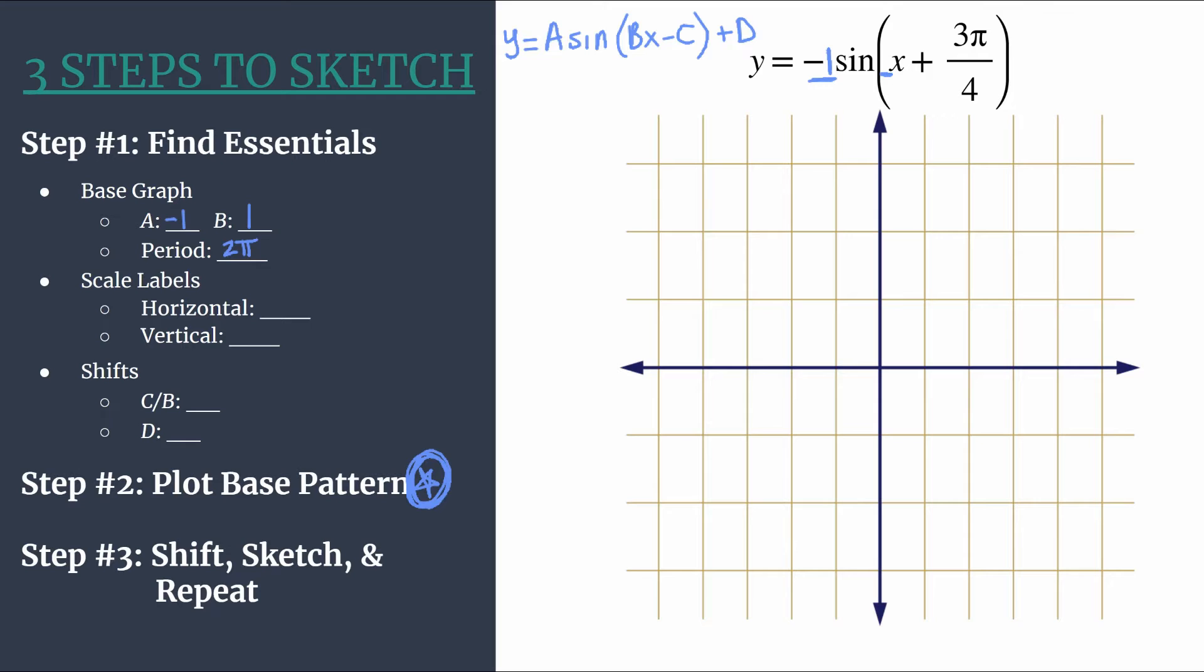Now we can choose our scale labels, and we choose the horizontal scale labels very intentionally. We take our period and divide by 4. We do this so that our 4 key points in the base pattern in the next step will align with our horizontal tick marks and how we have them labeled. So 2π over 4, we'll be counting by π/2 for our horizontal tick marks. And for our vertical tick marks, we can usually use 1 or whatever a is if you felt like it. I usually like to use 1.